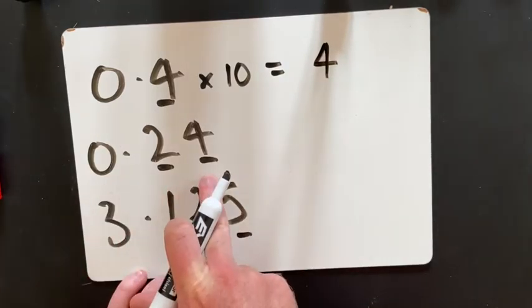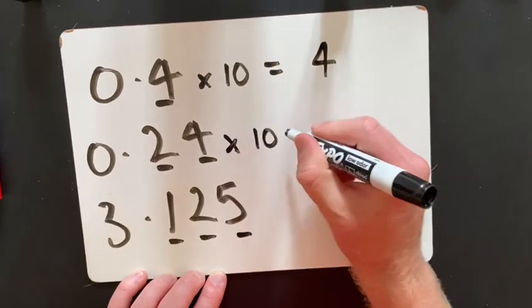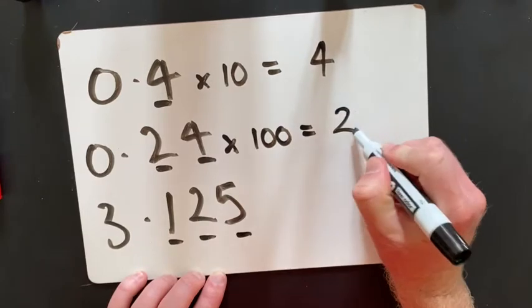This has two decimal numbers, 0.24, so I'm going to multiply it by 100. And that will give me 0.24 will change to 24.